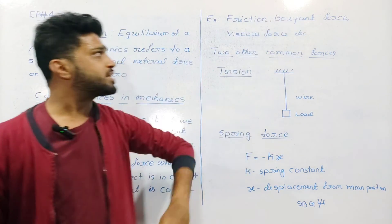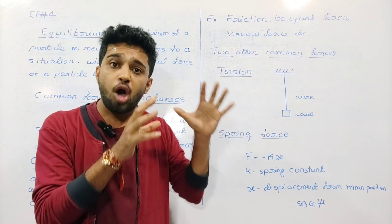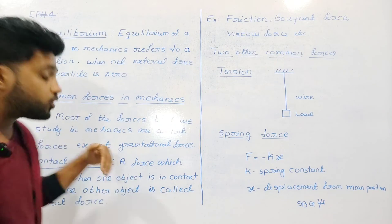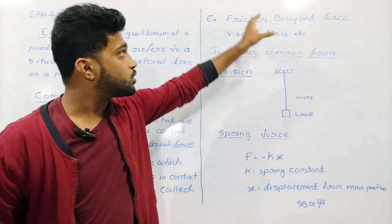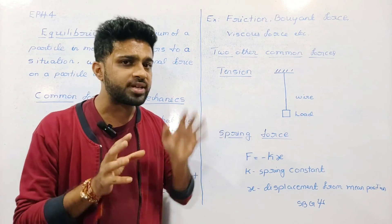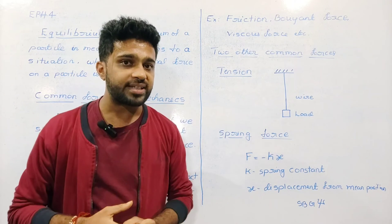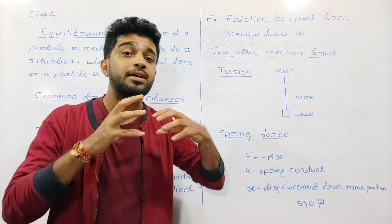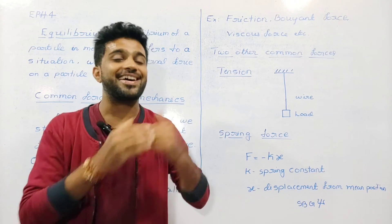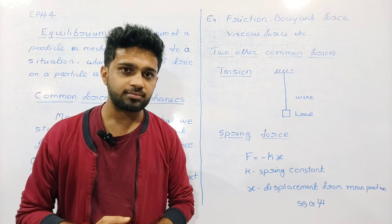Examples of contact forces are friction, buoyant force, and viscous force. Friction is a contact force between two solid objects. Friction is a force that opposes the relative motion between two objects.